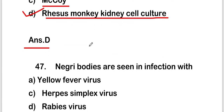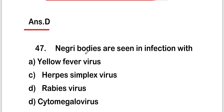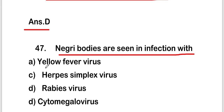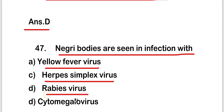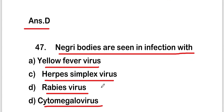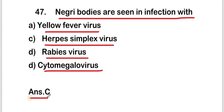The next question is: Negri bodies are seen in infections with yellow fever virus, herpes simplex virus, rabies virus, or cytomegalovirus? The right answer is option C, that is rabies virus. So Negri bodies are seen in infection with rabies virus.